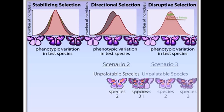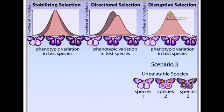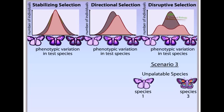In another scenario, the intermediately marked model decreases in abundance. A similar decline occurs in the mimics because predators now only avoid those that are barely marked or highly marked. Therefore, after many generations, the population of mimics is dominated by the more extreme phenotypes, and its graph of frequencies has two peaks. This is disruptive selection.